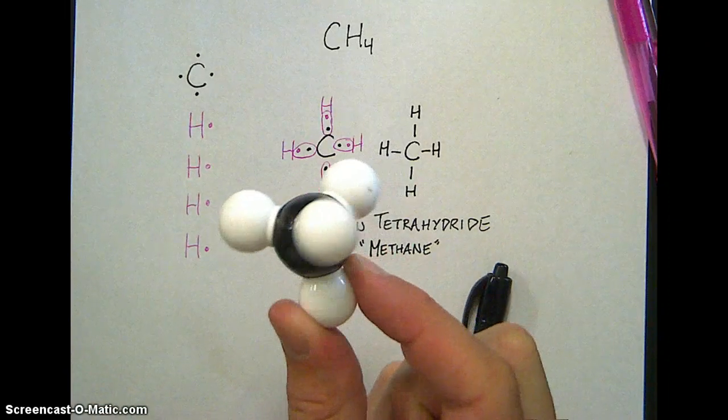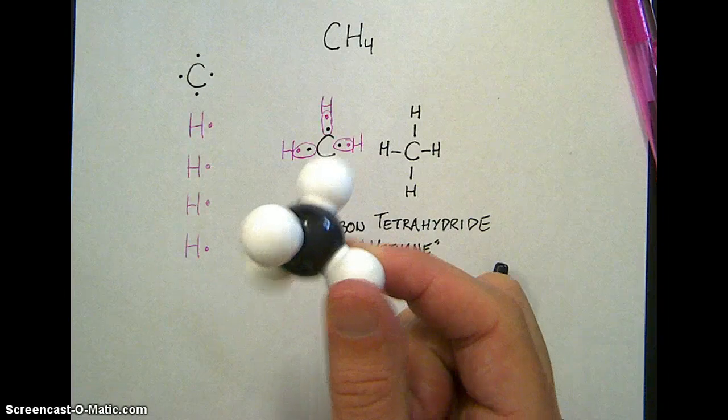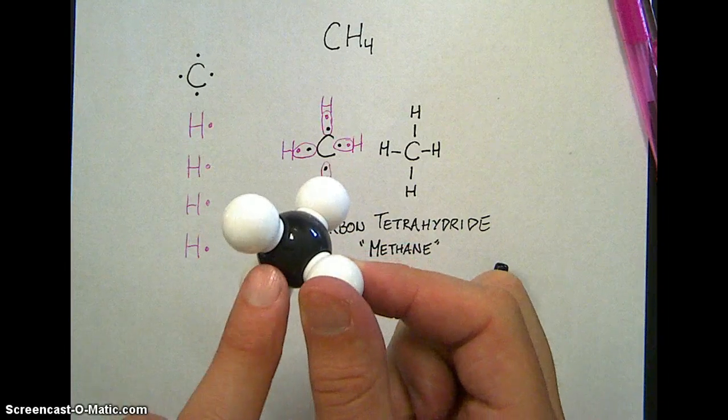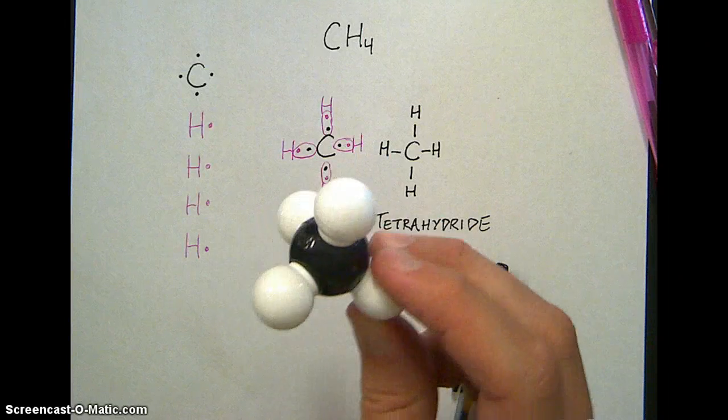You'll notice that the four hydrogens are each pointed as far away from each other as possible. That's because each bond is a pair of electrons, and electrons push each other apart. This is as far as they can get from each other.